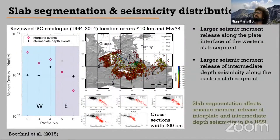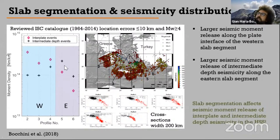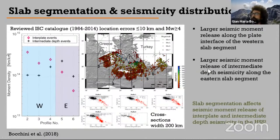We investigated how the slab geometry relates to seismicity distribution using along-strike seismic profiles. Separating interplate seismicity from intermediate-depth seismicity across four profiles, we see a clear inversion in released seismic moment: above the western slab segment, most seismic moment is released by interplate events, while above the eastern slab segment, a higher proportion is released by intermediate-depth events. This slab segmentation thus affects the moment release partitioning between interplate and intermediate-depth seismicity in the Hellenic subduction system.